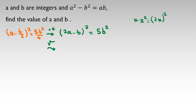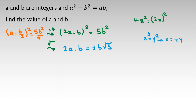Taking the square root of both sides — since x squared equals y squared implies x equals plus or minus y — we conclude: 2a minus b equals plus or minus b times root 5. Now, a is an integer and b is also an integer, so the left-hand side is an integer. Therefore, b times root 5 must also be an integer.